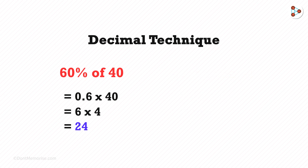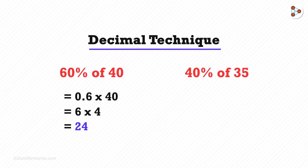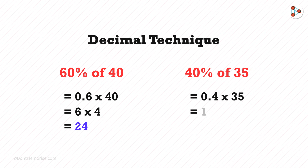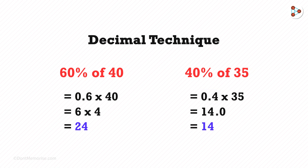Similarly, what is 40% of 35? We can use the decimal technique here. 40% is 0.4, and 0.4 multiplied by 35: 35 multiplied by 4 is 140, and because we have a decimal point here, we put a decimal point here. We get the answer as 14.0, or 14. So 40% of 35 is 14.